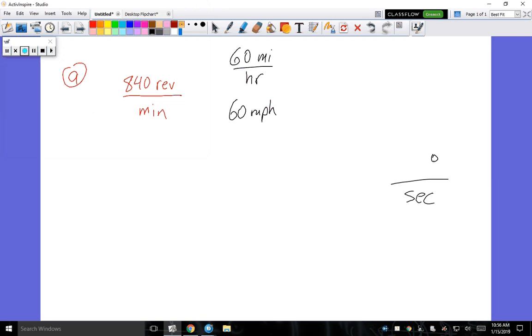Okay, so this does give you some extraneous information. It gives you extra information that you don't need per se in order to get to degrees per second, and that extra information they gave you is this 60 miles per hour.